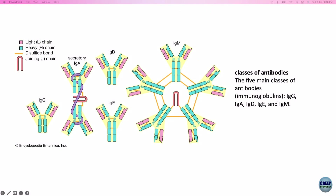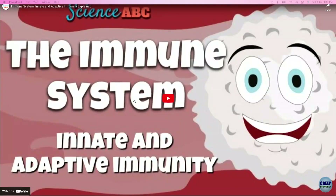This is the structure of immunoglobulins. You have five different kinds: IgG, IgA, IgD, IgE, and IgM. These are the five immunoglobulins produced by our B cells. Now I want to show a short video that in just a few minutes gives you an understanding of different immune cells, how they function, how they get activated, and how they kill bacteria and viruses.